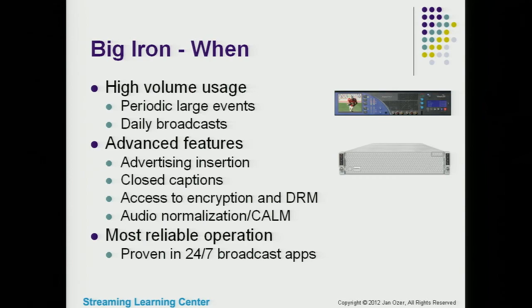When do you buy a big iron system? Big iron systems are those costing anywhere between $15,000 and $40,000. From my perspective, you need to be distributing frequent large events to justify such an expenditure. You need to be able to have a return on investment for an investment of that size.